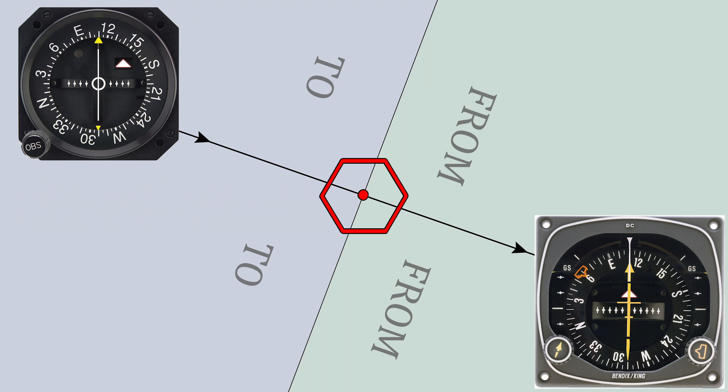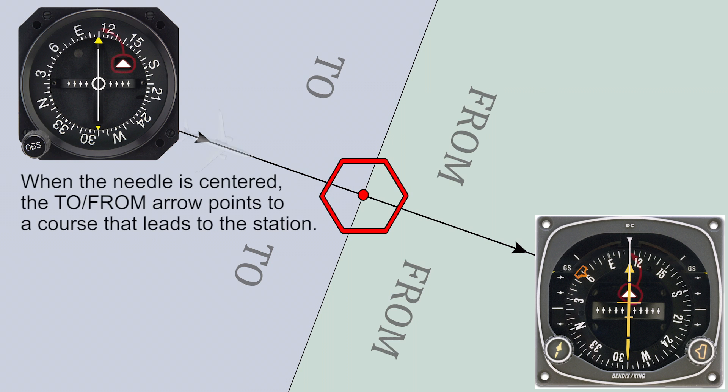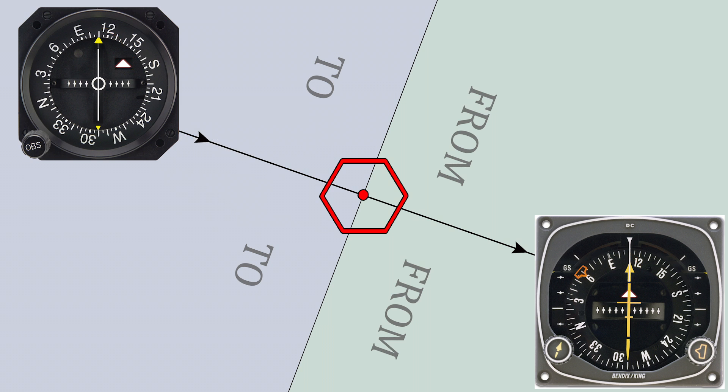To simplify it, if you want to fly towards the station whenever the needle centers, turn to the course that is pointed by the to from flag indicator, and vice versa if you want to fly away from the station. The radial will be indicated on the opposite side of the to from flag.